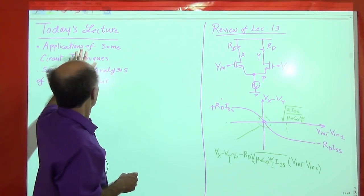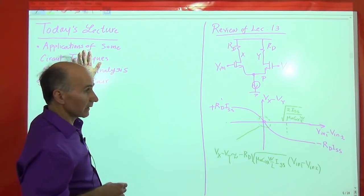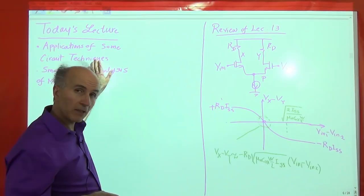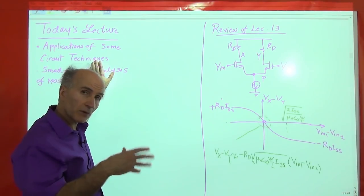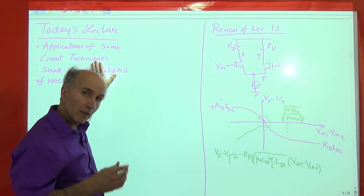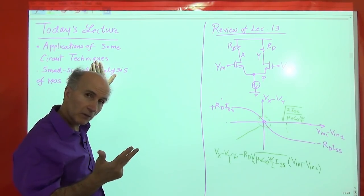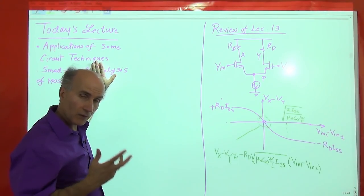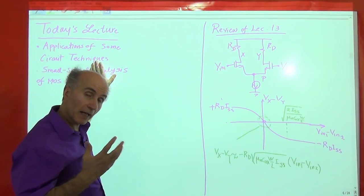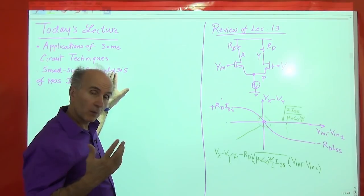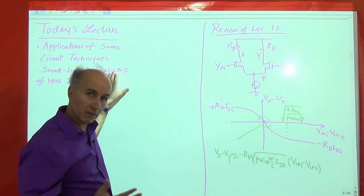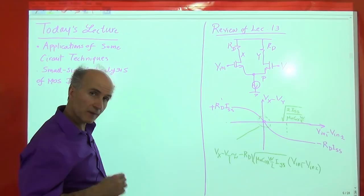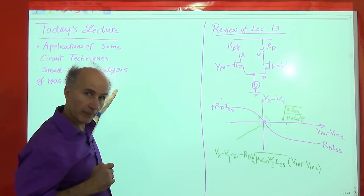Today we will first look at some applications of all the circuits we have seen so far — the cascode, the current mirror, and the differential pair — just to have an appreciation for the widespread use of these circuits today. Then we will go on to the small signal analysis of the MOS differential pair.